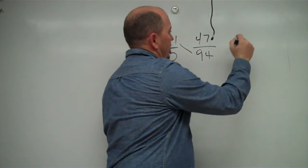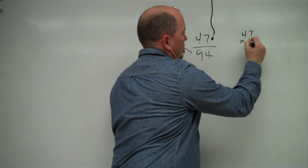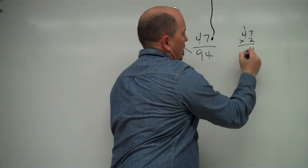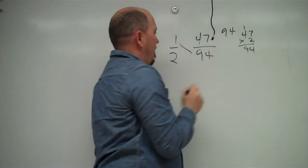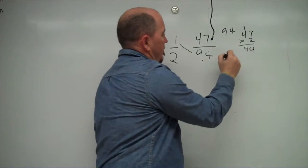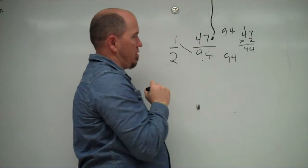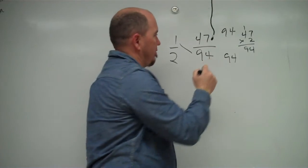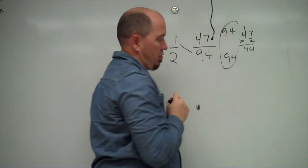So 2 times 47, well, 47 times 2 is 94. And then 1 times 94 is 94. So are these two equivalent fractions? They are, in fact, equivalent fractions because those two numbers are the same.